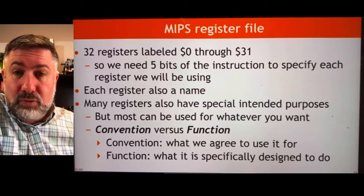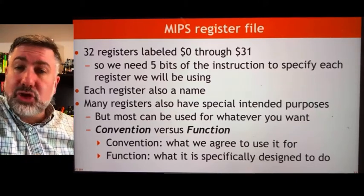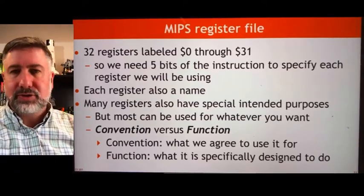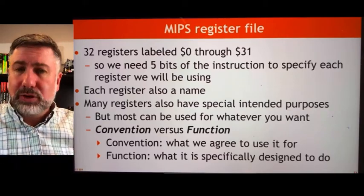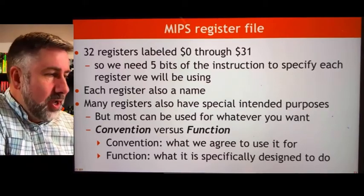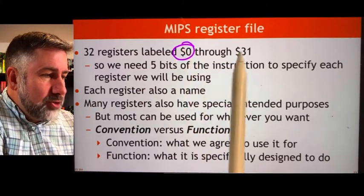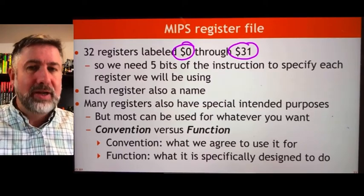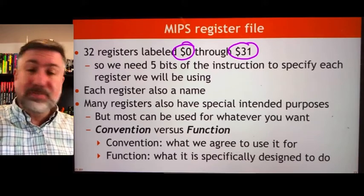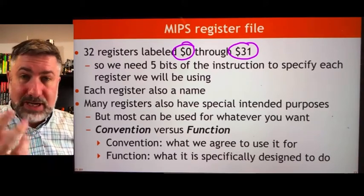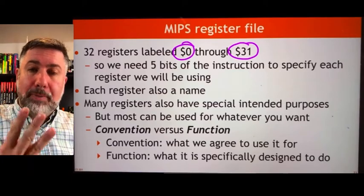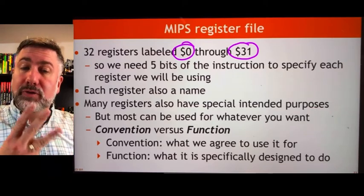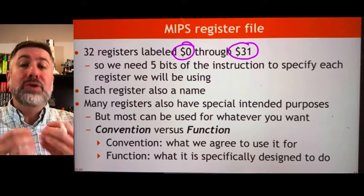The first thing we look at is the register file. In MIPS, the register file has 32 registers. We will learn the names of these registers and why they are useful in certain contexts as we learn to write assembly code. For now, it's enough to know there are 32 registers labeled 0 through 31. 32 registers means it takes five bits to specify which register we're interested in. It's a three-operand assembly language — two source registers and a destination register.